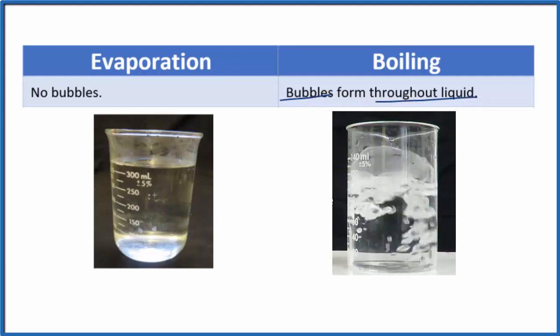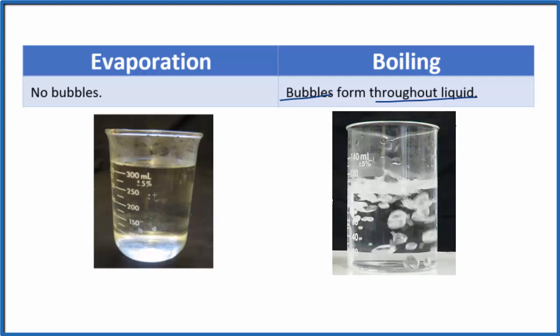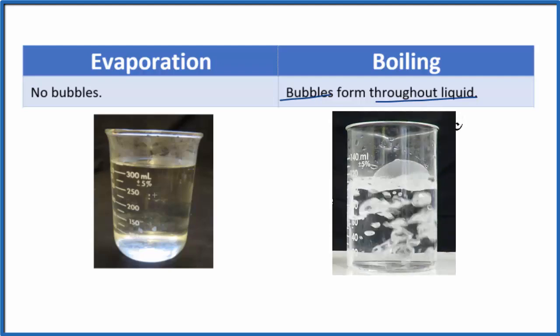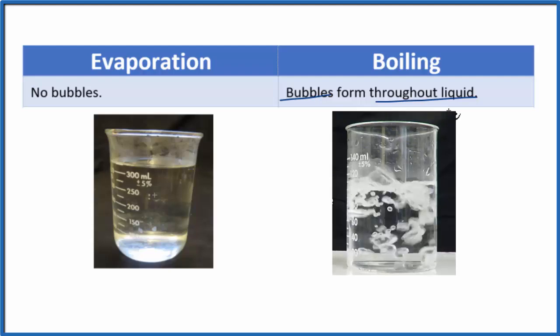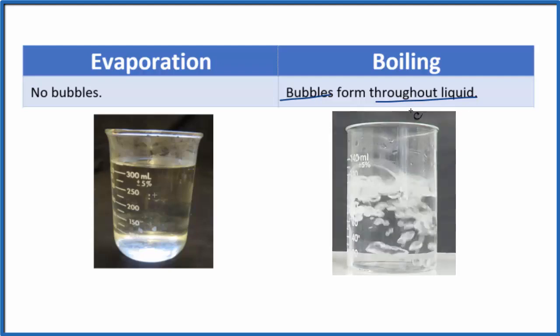We have bubbles forming in the bottom, the sides, and near the top. So one difference we can see right away is that with evaporation we don't have bubbling, but with boiling we have bubbles throughout the liquid.